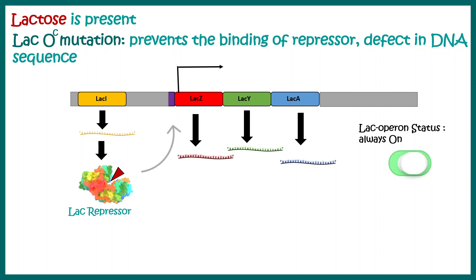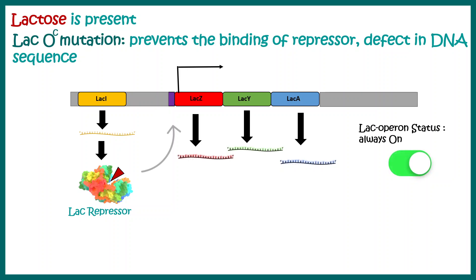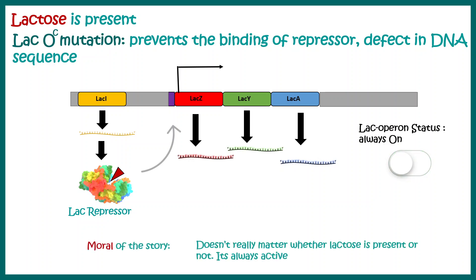As a result, the lactose operon is always on. When lactose is present, the repressor is inhibited anyway and still cannot bind to the defective operator site. So this mutation leads to constitutive activation of the lac operon.